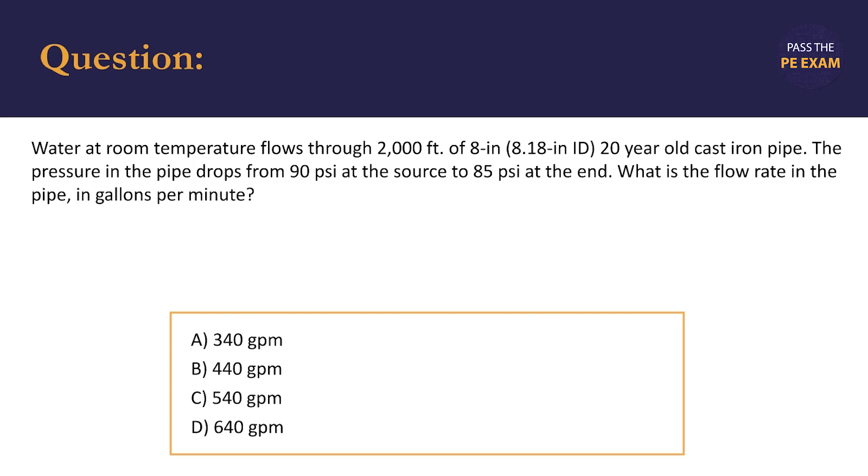This time we're looking at a problem involving the flow of water. We're told that this water is at room temperature and it flows through 2,000 feet of 8 inch 20 year old cast iron pipe and that dimension is nominal, we're given the internal diameter. The pressure decreases by 5 psi as it starts at 90 psi at the source and by the time it reaches the discharge it's at 85 psi. We're then asked what the flow rate is in gallons per minute and we're given four options: 340, 440, 540, or 640.